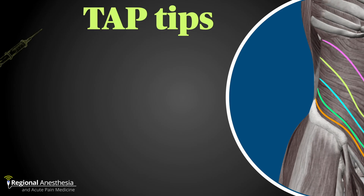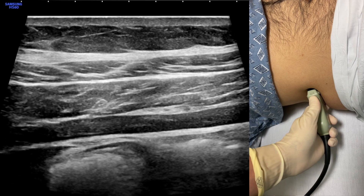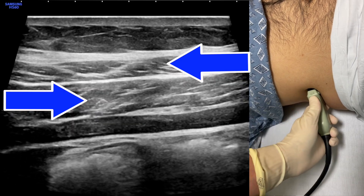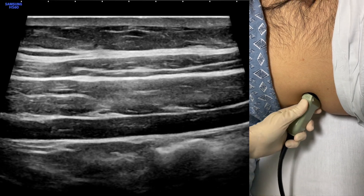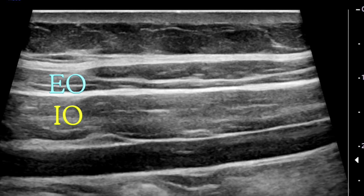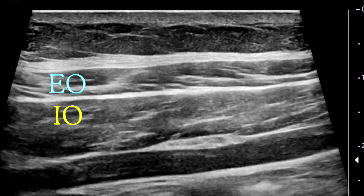Here are some TAP tips. Number one: use the tectonic sign to define the layers. In a slim patient, it's often easy to identify the three muscle layers on screen. In many patients, however, the screen looks like a seven-layer bean dip. Remember that the internal and external oblique muscles are oriented at 90 degrees to each other, so if you fan your probe in a cephalocaudal fashion, the muscle layers will appear to run back and forth with respect to each other, like tectonic plates sliding during an earthquake. The transversus muscle and fat don't tend to give that illusion of motion, so you can quickly identify the obliques and work from there.